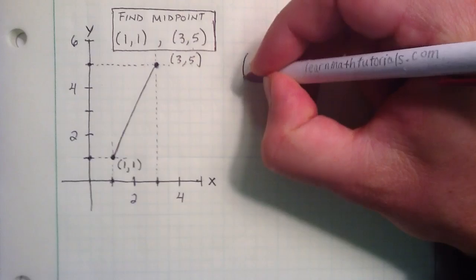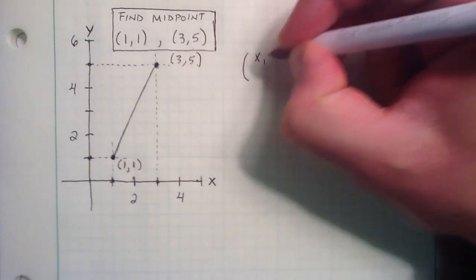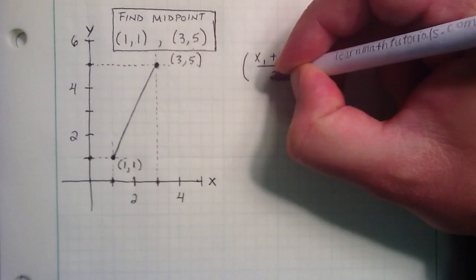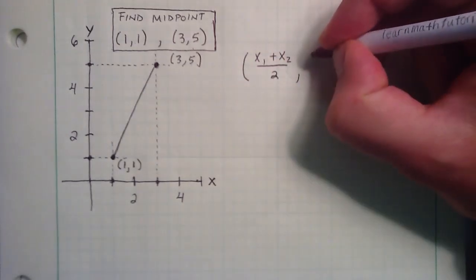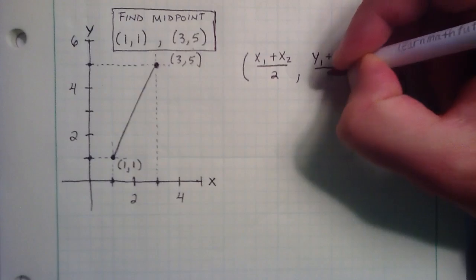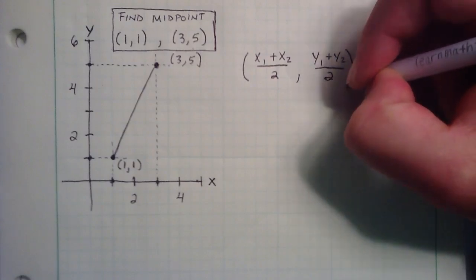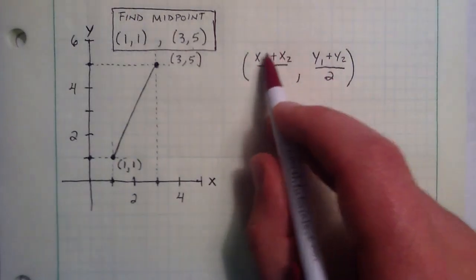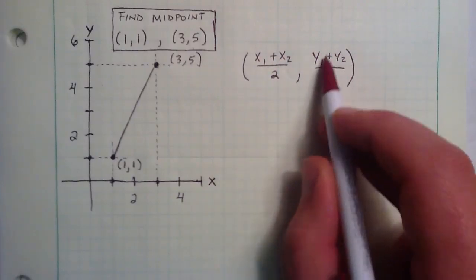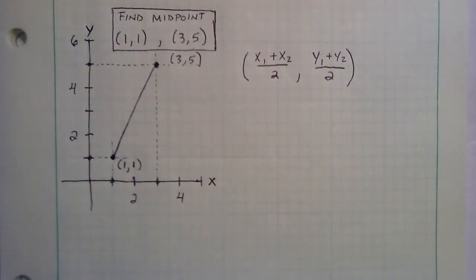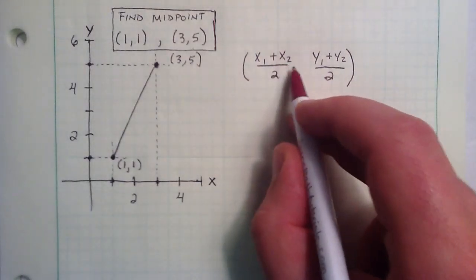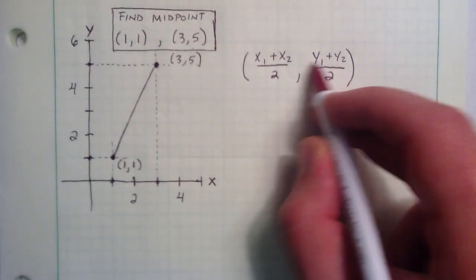So let's go back to the midpoint formula. It was (x1 + x2)/2, (y1 + y2)/2. So really, this is in the form of a point. This is the x component of the point, and this is the y component of the midpoint. So basically, we just need to figure out what our x1, x2, y1, and y2 are, and then we can simplify.